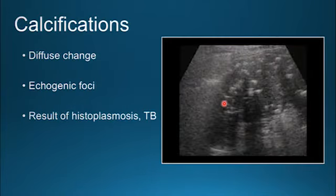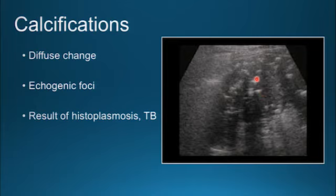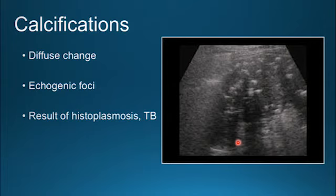Calcifications represent a generally diffuse change seen within the spleen. There are echogenic foci seen all around the spleen — usually diffuse, so you see multiple echogenic foci scattered throughout rather than just one or two. This can be a result of histoplasmosis or tuberculosis, some type of infection.